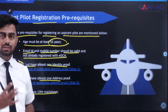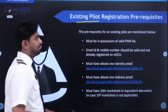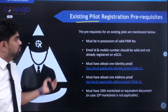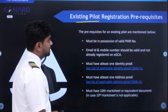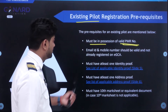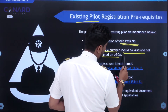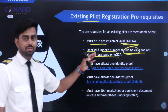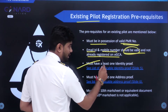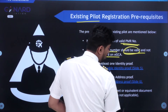For existing pilots, you can transfer your Udan ID — your previous login ID — to the EGCA one. The documents required are: a valid PMR number (your file number), one email ID and mobile number not already registered on EGCA and should be valid, at least one identity proof, at least one address proof, and a 10th marksheet or equivalent document in case the 10th marksheet is not applicable.